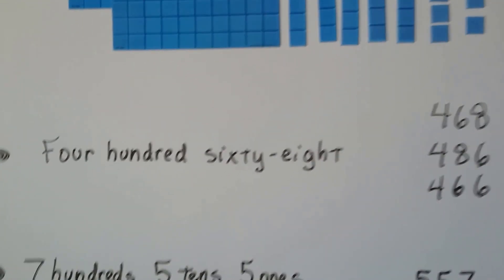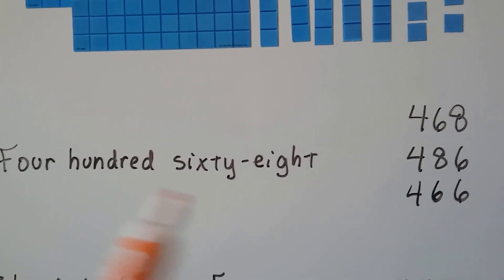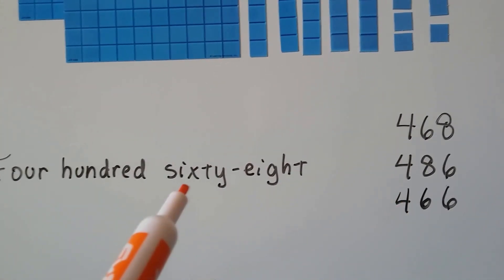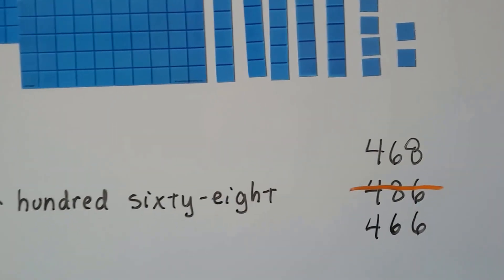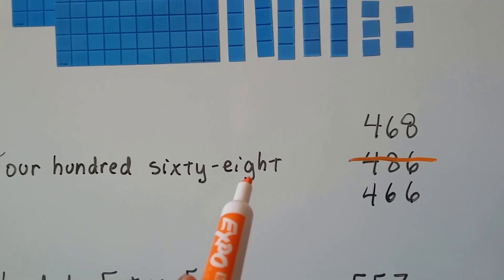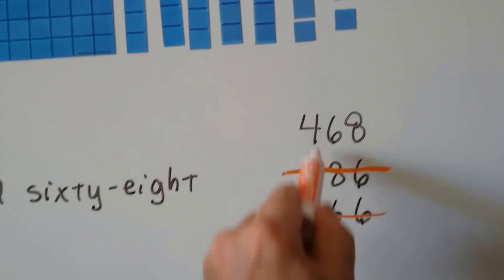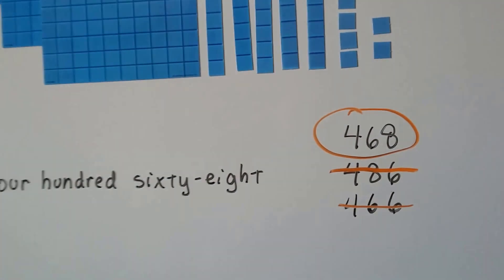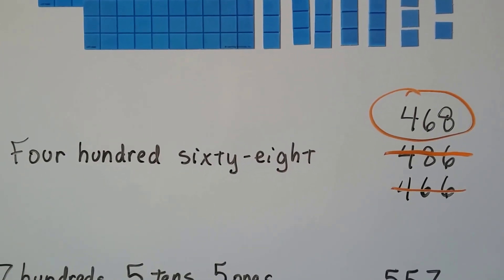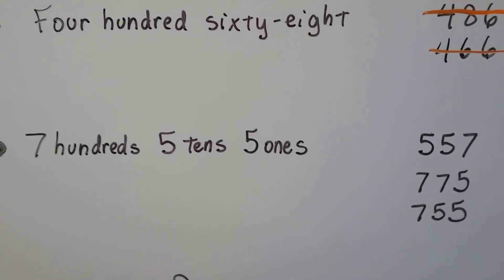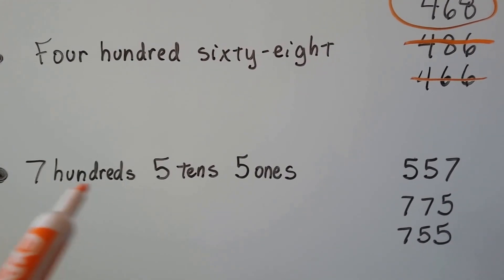This one says four hundred sixty-eight, so there should be a four in the hundreds place — they all have a four, so that doesn't help narrow it down. There should be a six in the tens place. One option has an eight in the tens place, so that doesn't work. Another has a six in the ones place, but it should end in eight. So the correct one has four in hundreds, six in tens, and eight in ones: four hundred sixty-eight.